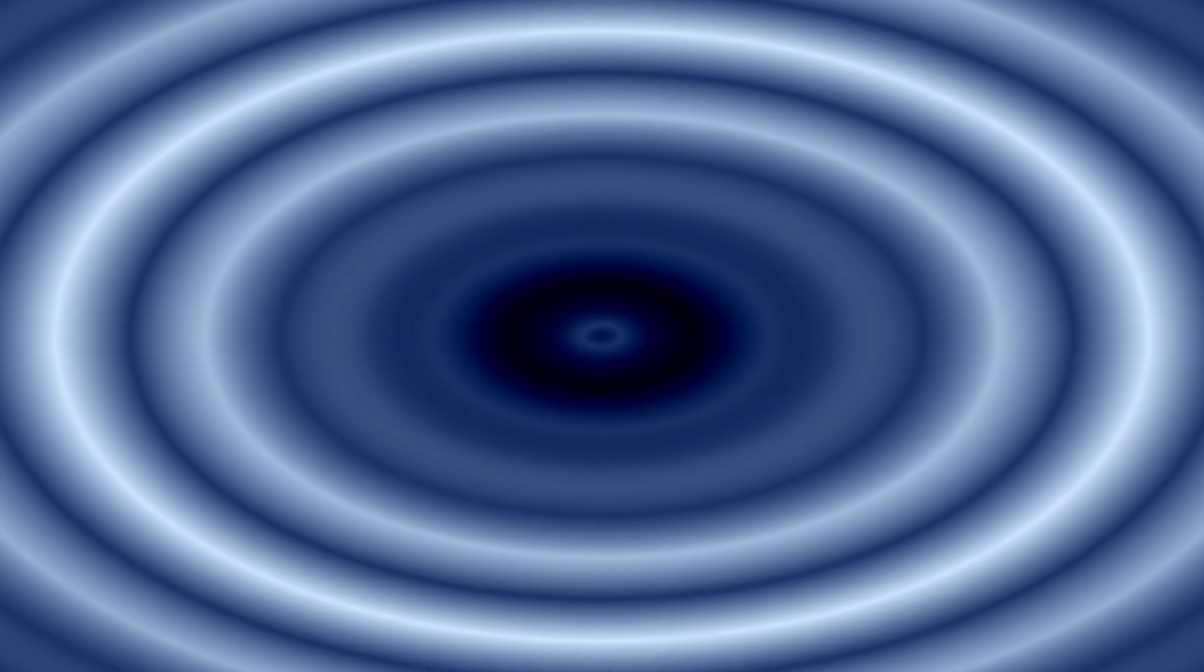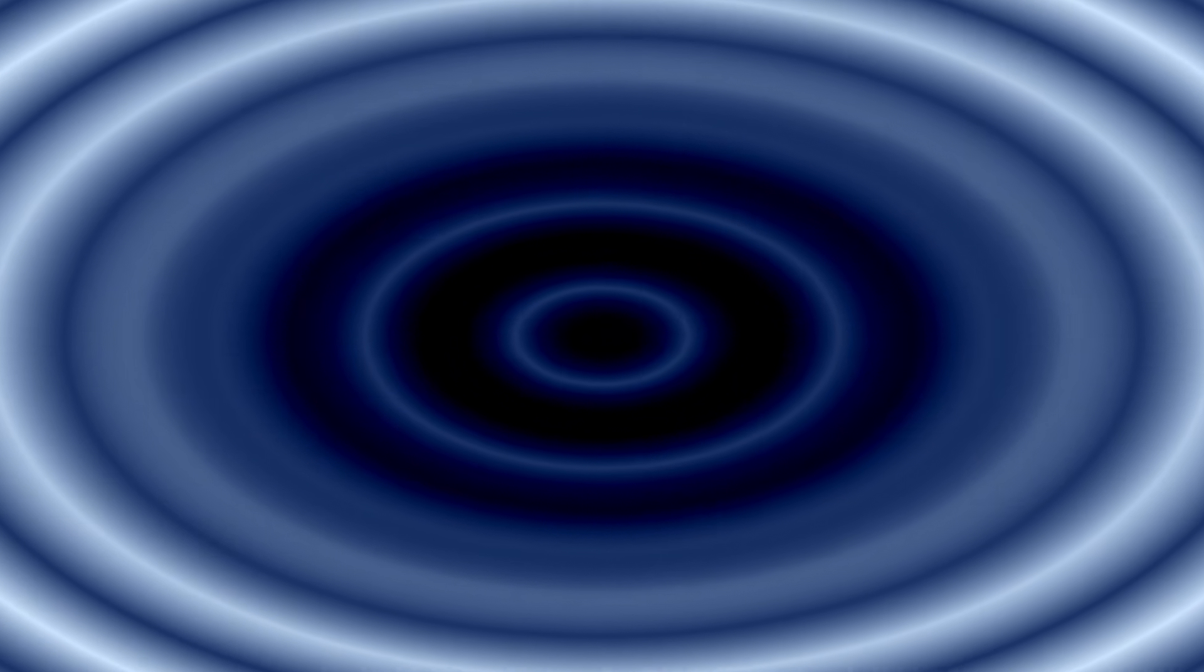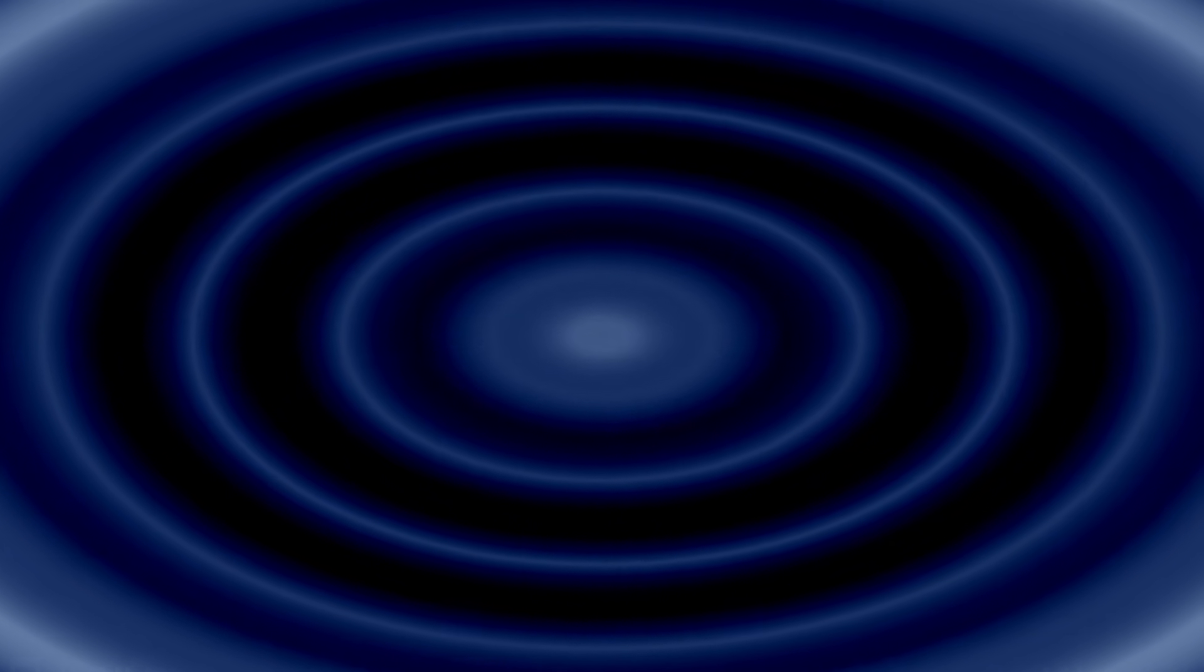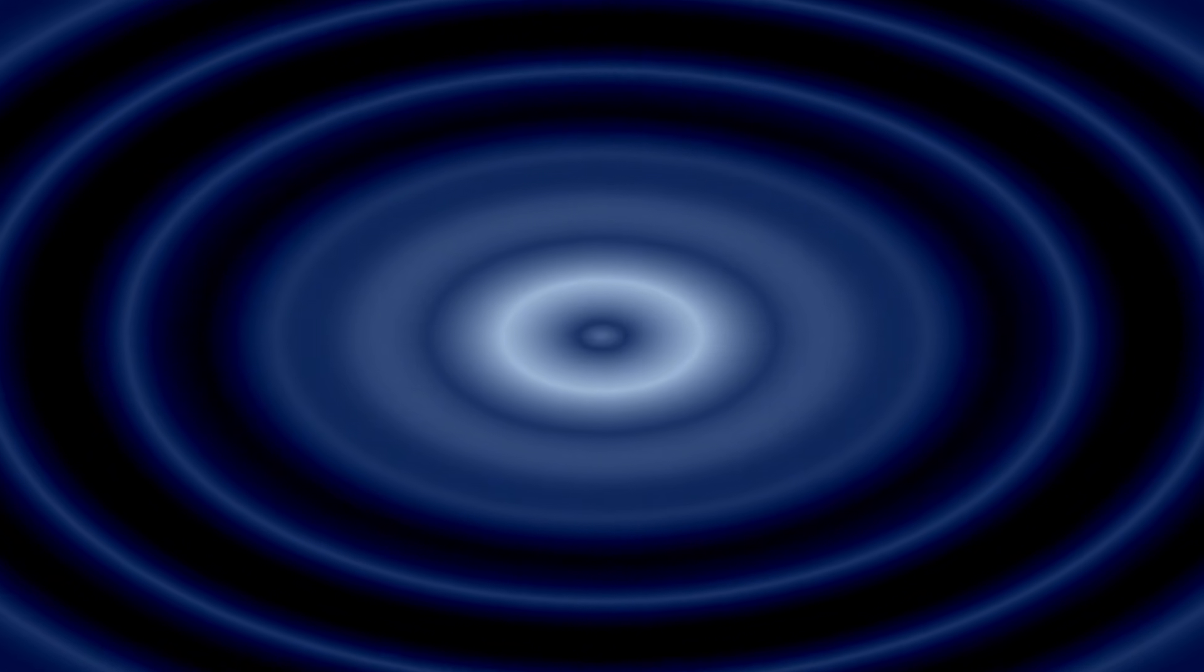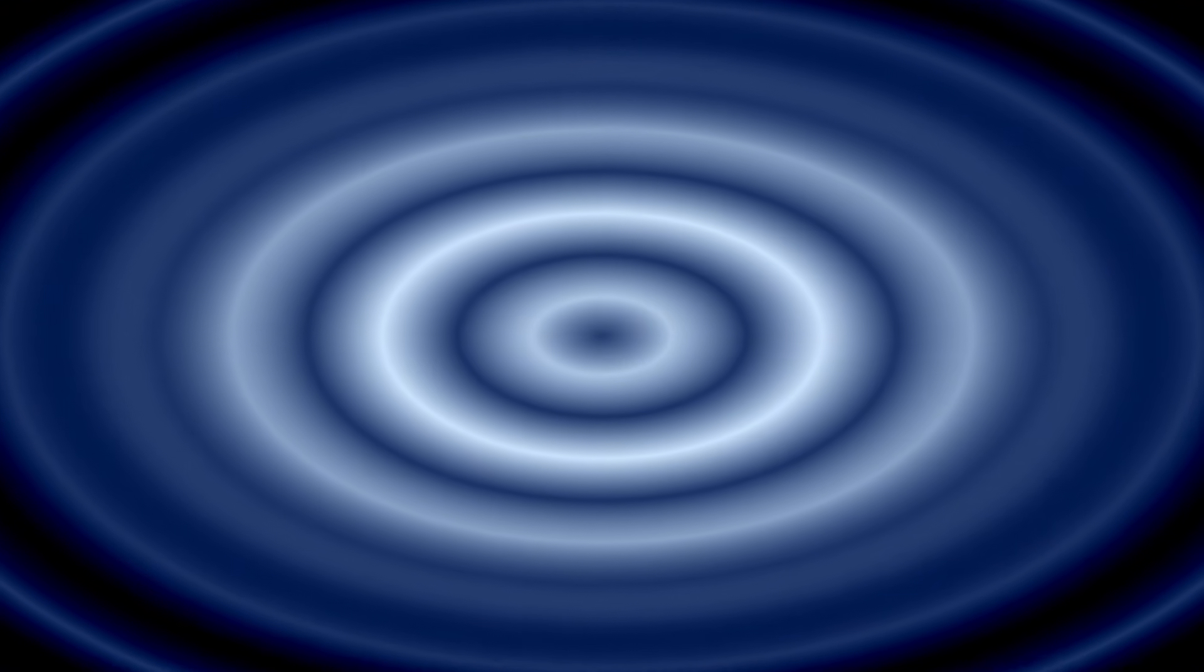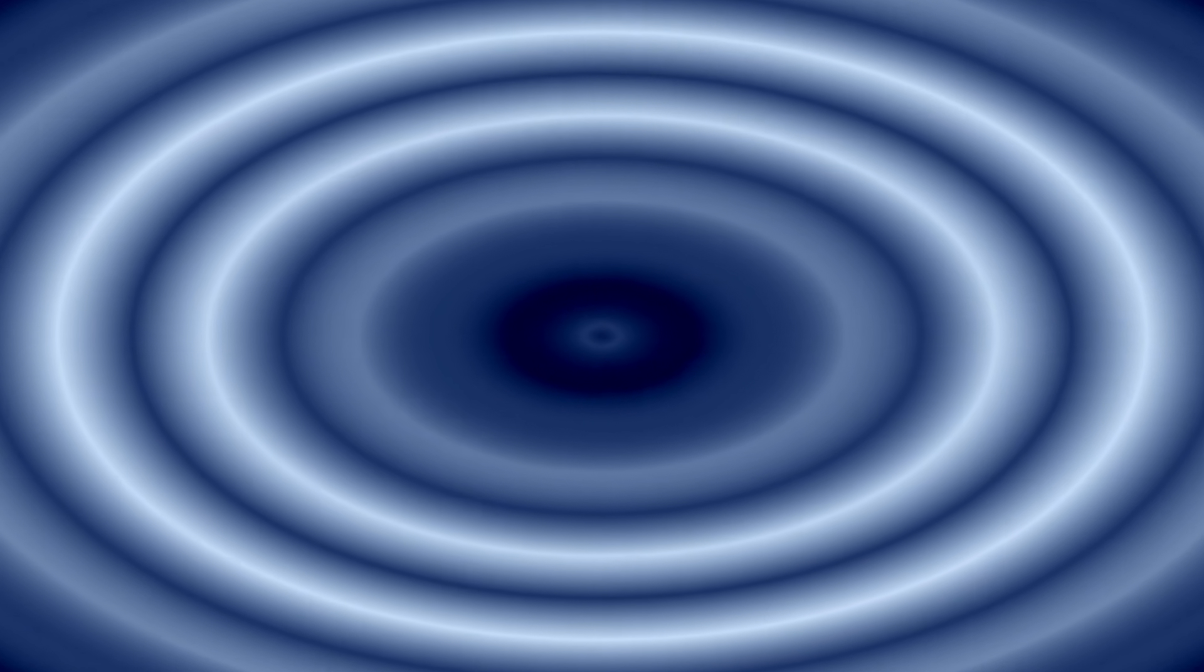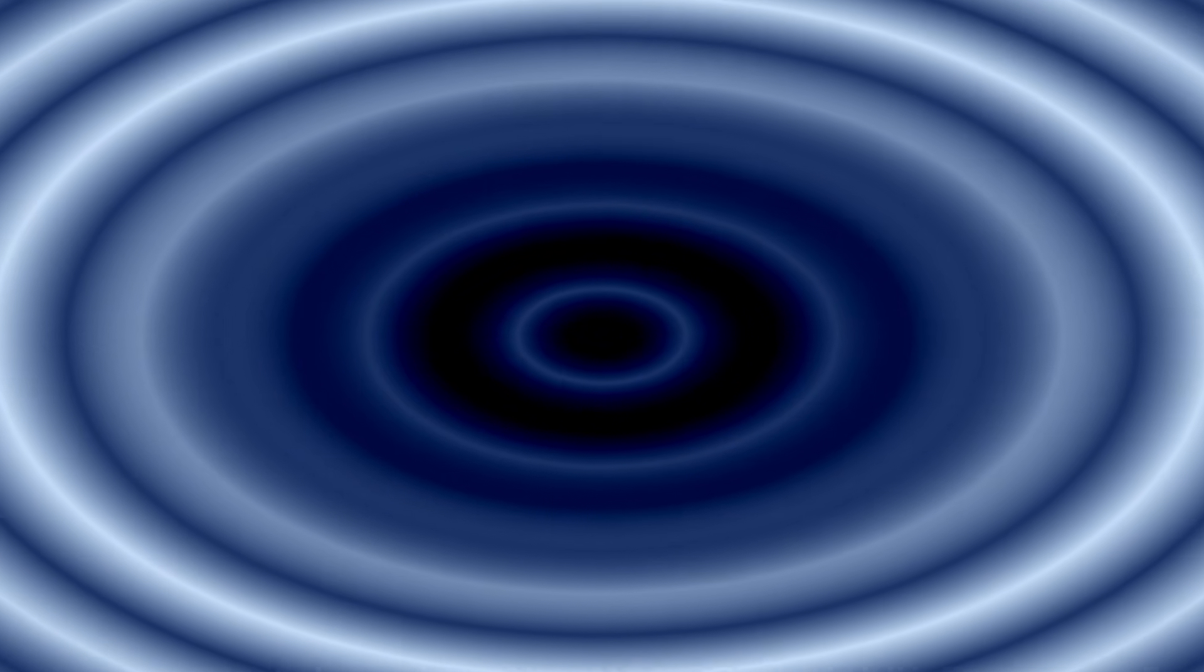So then how does quantum entanglement specifically play into this? If you've got these entangled particles in DNA, then you could imagine that information could be transferred almost instantaneously between different parts of a cell or even between different cells. So like the cells are talking to each other using quantum entanglement. Potentially, yes. And that could explain some of the incredible efficiency and coordination we see in biological processes, like how genes are expressed in a synchronized way or the speed of enzymatic reactions.